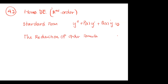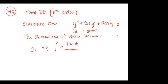The formula for y2: when y1 is given, we are going to find y2. y2 equals y1 multiplied by the integral of e to the negative integral of p(x) dx, divided by the first solution squared.